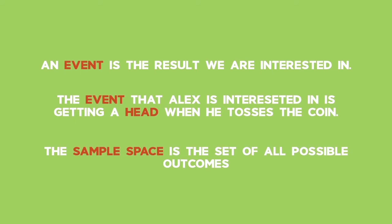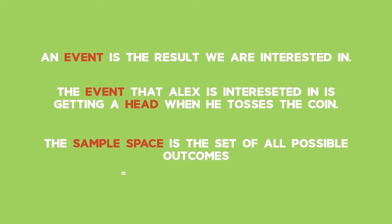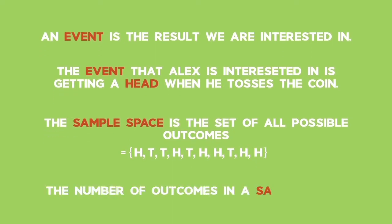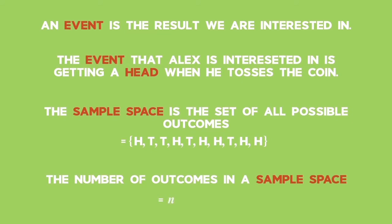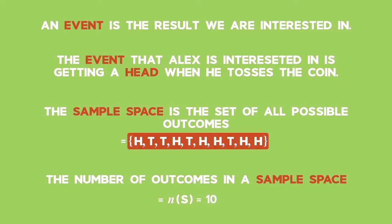The sample space is the set of all possible outcomes. In Alex's case, each outcome from ten tosses of the coin will make up the sample space, written as: {head, tail, tail, head, tail, head, head, tail, head, head}. We write the number of outcomes in a sample space as N(S). In this example, N(S) is equal to ten, corresponding to the ten outcomes.